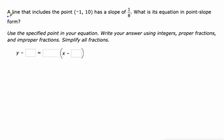This says a line that includes the point (-1, 10) and has a slope of 1/8. What is the equation in point-slope form? So what we do is let's take the slope first. Slope goes right here, 1/8. There's a fraction option on IXL where you can put it in as a fraction.